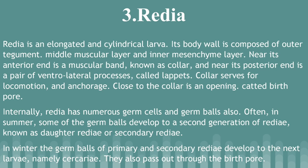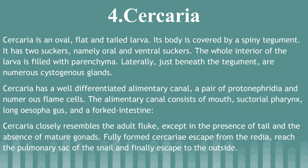Cercariae is an oval, flat, and tailed larva. Its body is covered by a spiny tegument. It has two suckers, namely oral and ventral suckers. The whole interior of the larva is filled with parenchyma. Laterally, just beneath the tegument, there are numerous cystogenous glands. Cercariae has a well-differentiated alimentary canal, a pair of protonephridia, and numerous flame cells. The alimentary canal consists of mouth, muscular pharynx, long esophagus, and forked intestine. Cercariae closely resembles the adult fluke, except for the presence of a tail and the absence of mature gonads. Fully formed Cercariae escape from the Redia, reach the pulmonary sac of the snail, and finally escape to the outside.